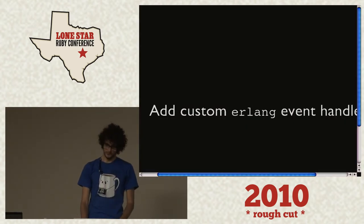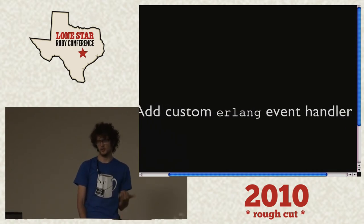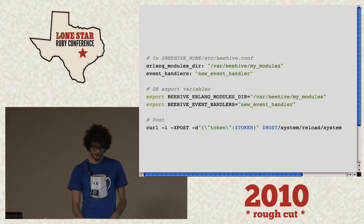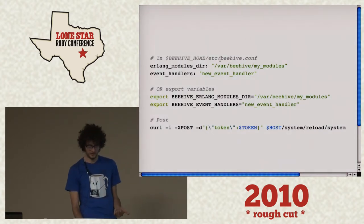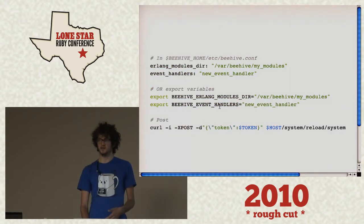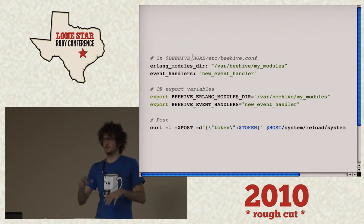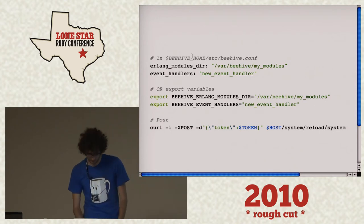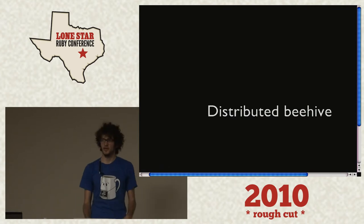Some more advanced fun to show you how powerful Beehive actually is. You can add custom event handlers — currently it only supports Erlang-based event handlers, but the roadmap includes supporting other languages. These two approaches do the exact same thing: either add an etc file or use export so your Beehive can run in different environments and different homes. Then do a POST to reload the system — it propagates throughout the whole network.